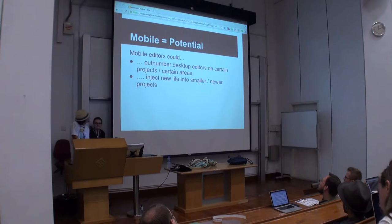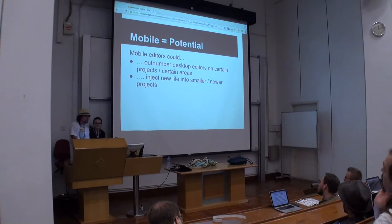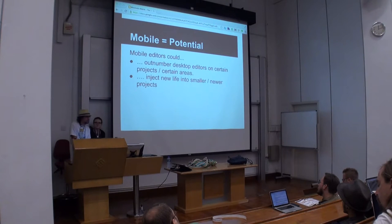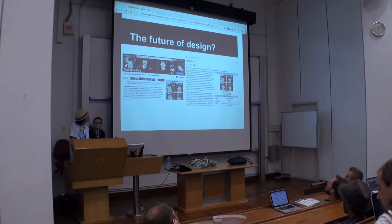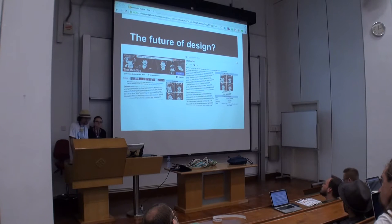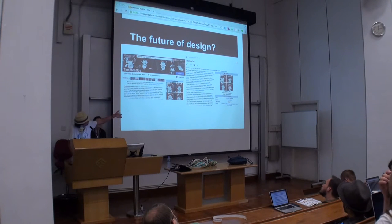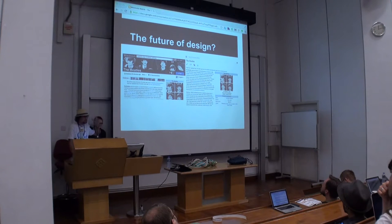There's a lot of potential here. Mobile editors could outnumber desktop editors in the future, and we have to bear that in mind. They could inject life into a lot of our smaller projects with lower amounts of editors. We're also thinking a lot about design. Last year Brandon Harris did a presentation about what Wikipedia might look like in 2015, called Athena. We're working very closely with designers to make sure everything we design can scale up to desktop. If you view the mobile site in a desktop browser, the screenshot on the right is what you'll see, and on the left is Athena — what Brandon envisioned. You can see quite a few similarities, and it doesn't take much to imagine one becoming the other.